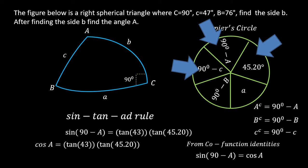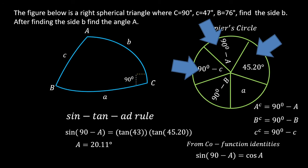To find A, I take the inverse cosine of both sides. The cosine cancels on the left, leaving A = inverse cosine of (tan 43 × tan 45.20). Typing this into the calculator gives angle A = 20.11 degrees.